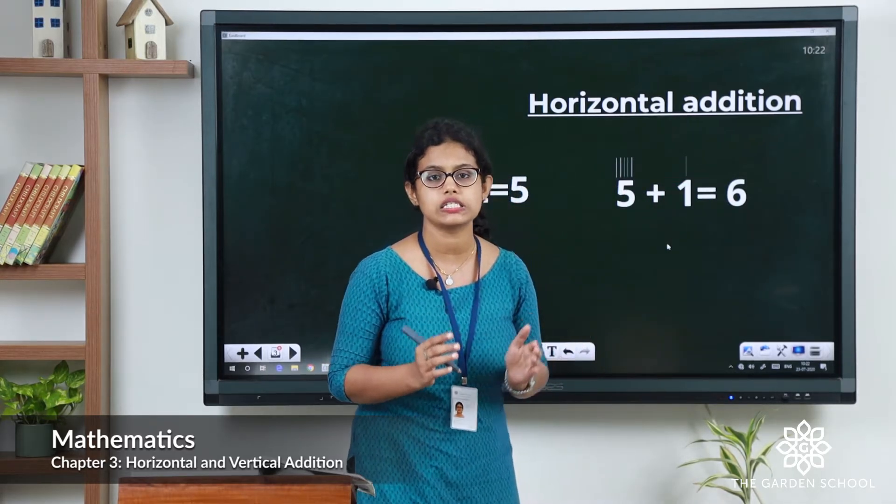Now let's see vertical addition. What is vertical addition? That is writing numbers vertically — one below the other. See the numbers: 4, and below 4 is 3. This is how you do vertical addition — writing numbers below each other and then adding. For this also you can draw lines.